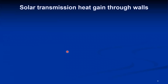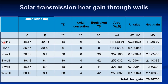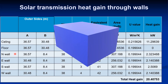For solar transmission heat gain, the calculation is presented in tabular form covering various surfaces: ceiling, floor, north wall, east wall, and south wall. To calculate areas, the ceiling and floor are 120 feet by 100 feet, which converts to 36.57 meters by 30.48 meters. The north and south wall areas use the 120-foot dimension — that is 36.57 meters — multiplied by the height of 8.4 meters. The east and west walls use the 100-foot dimension — 30.48 meters — multiplied by the height of 8.4 meters.